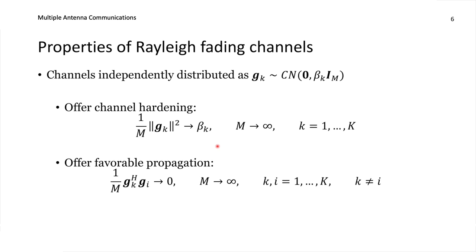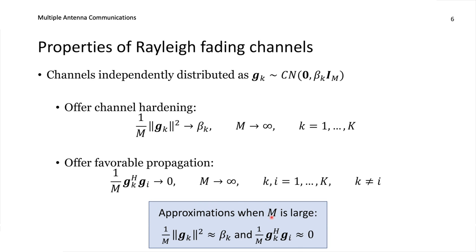A more important property is asymptotic favorable propagation. Taking the inner product between two different channel vectors and dividing by M gives a sample average where each term involves one element from gk and one from gi. Since they are independent with mean zero, the mean of each term is zero, so the inner product divided by M converges to zero. In summary, for IID Rayleigh fading: the squared norm divided by M is approximately beta k, and the inner product between two channel vectors divided by M is approximately zero.